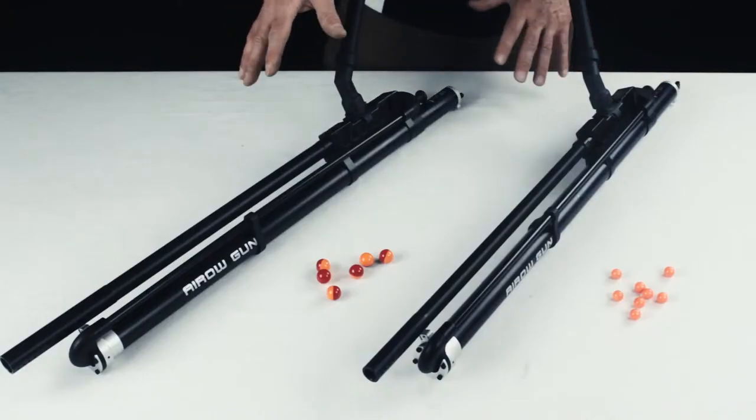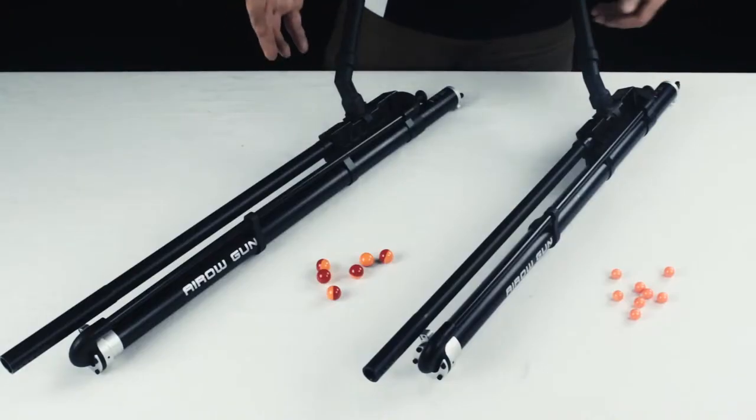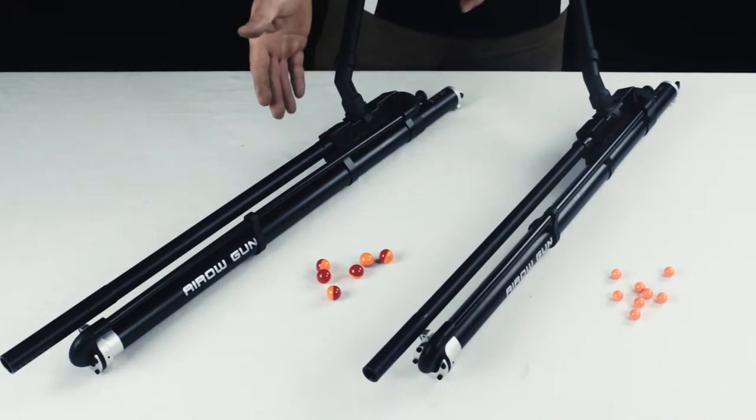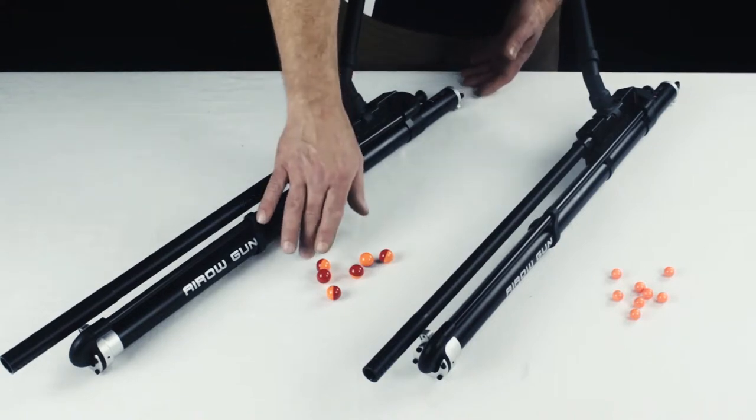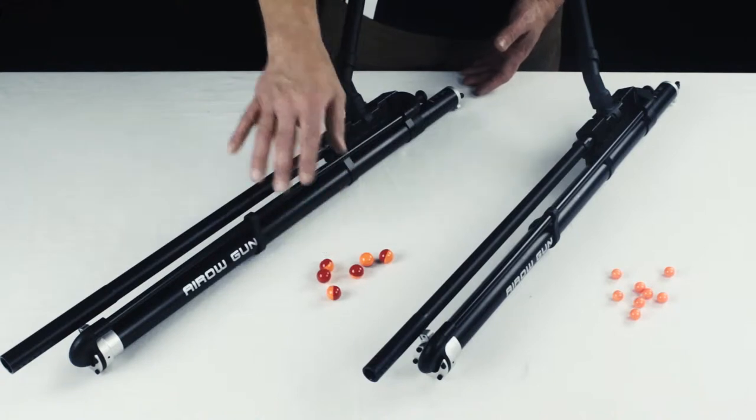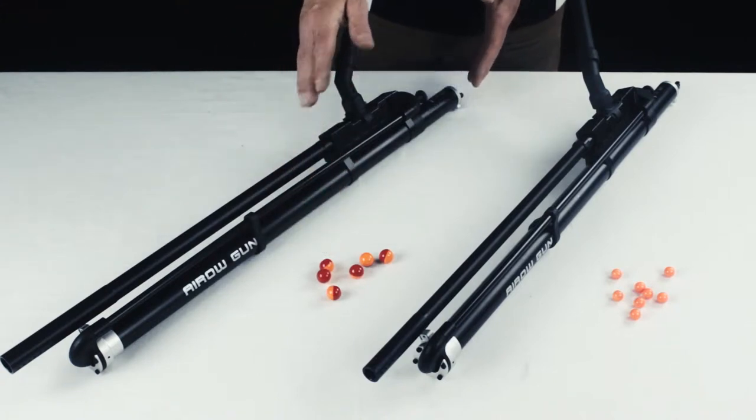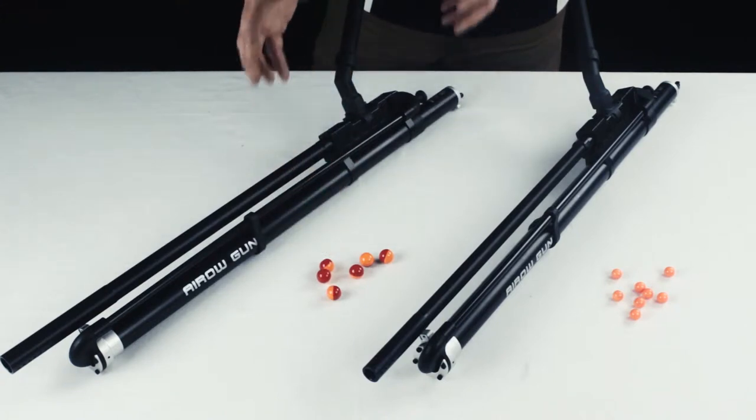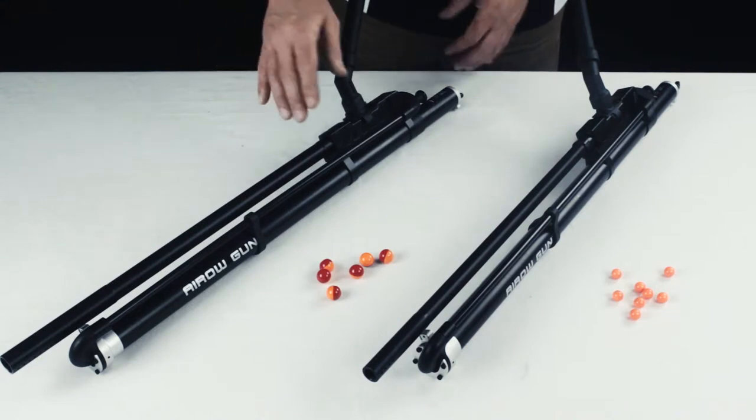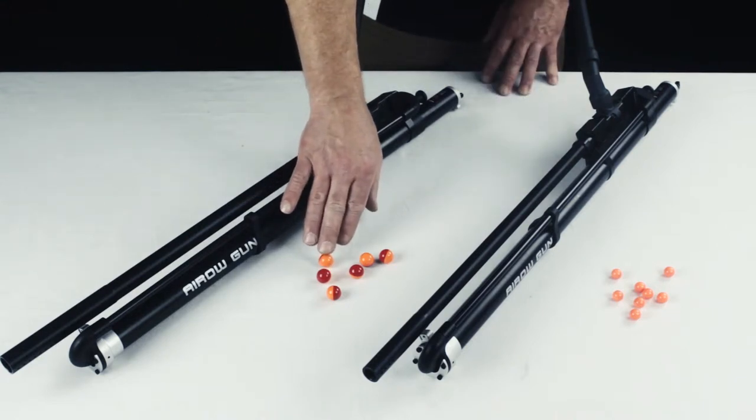Before we get started on taking these apart and showing you how to maintain them, I first want to go through a little bit about each one. The 68 caliber version that you see here shoots your larger 68 caliber paintballs. And this one is most ideal for bows from 50 to 70 pounds. You need that bow energy from 50 to 70 pounds to build up enough velocity to shoot the 68 caliber ball out.